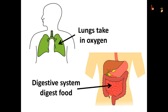We already know the digestive system digests the food required for our growth and energy. Also, lungs take in oxygen which is also required by our body. What if oxygen and food didn't reach the other parts of our body? All the organs and the cells need oxygen and food. So our body requires a transport system to deliver these to all the organs and all the cells.